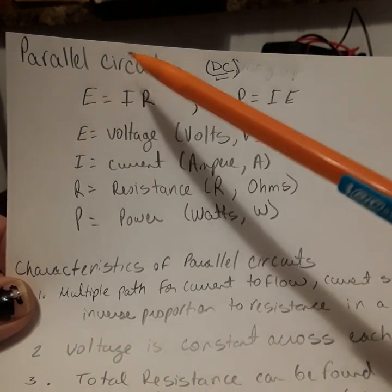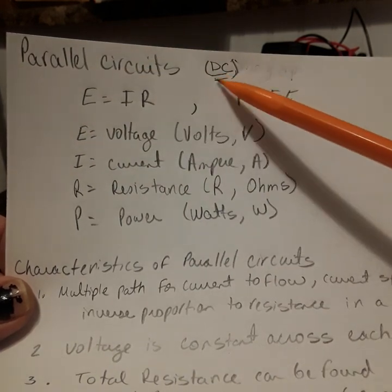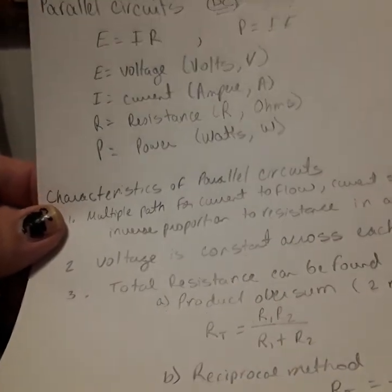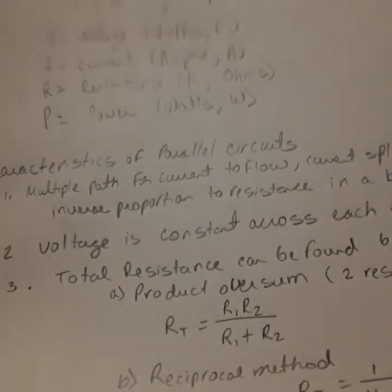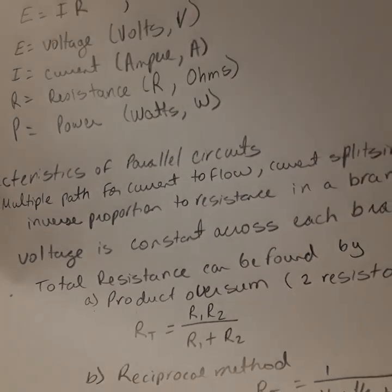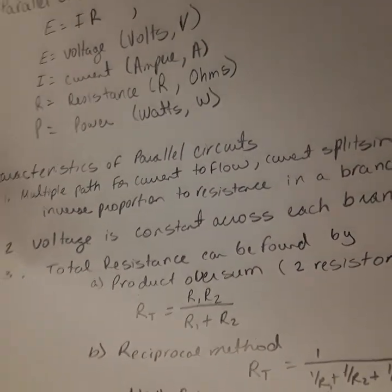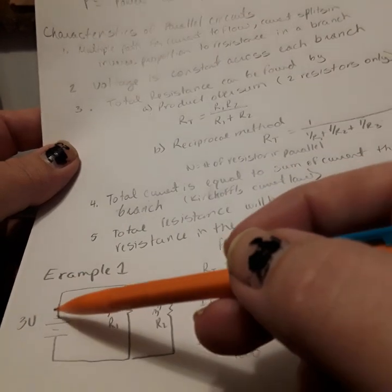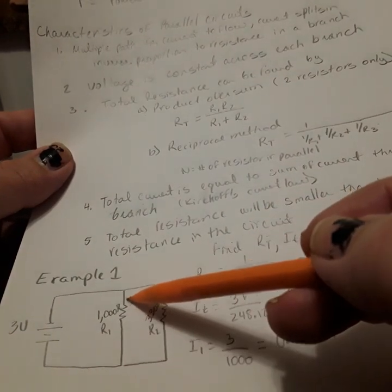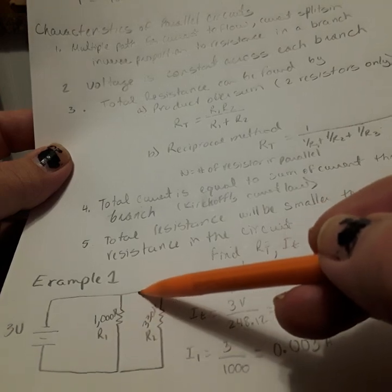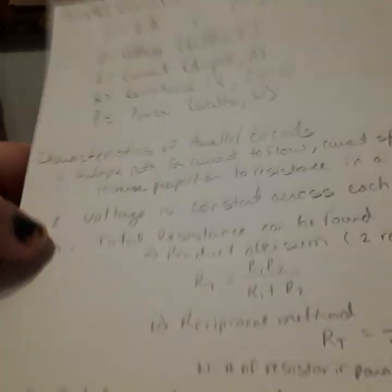What are the characteristics of parallel circuits in DC? First, there are multiple paths for current to flow. Current splits in inverse proportion to resistance in a branch. If we look at the example here, current from the battery splits at this point in two - it can go through here and here.